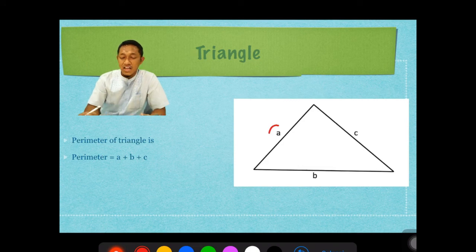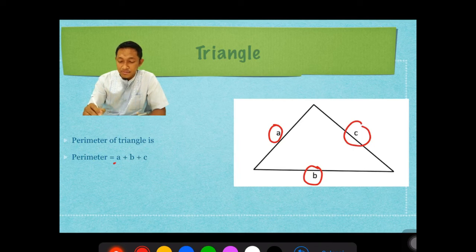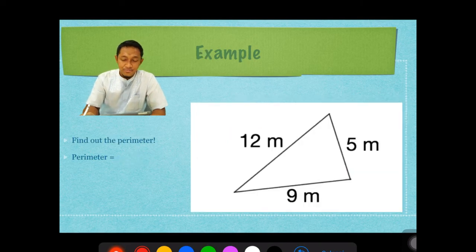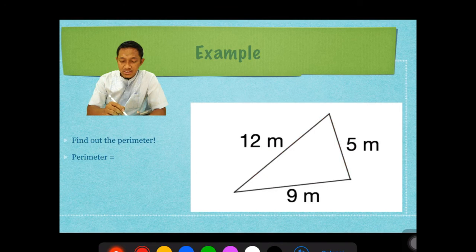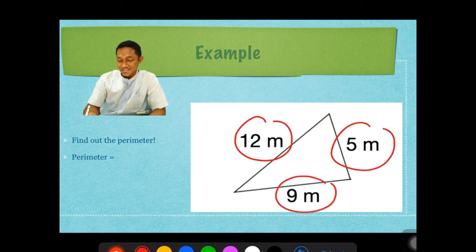Okay, next. The last one. If we want to find out the perimeter of triangle, sama caranya. Just add all the sides. Apapun bentuk segitiganya, itu asal kita tahu panjang sisinya, we can find out the perimeter, ya. The perimeter is A plus B plus C. Tambah B tambah C. Semua sisinya tambahin aja. Okay, this is the example.